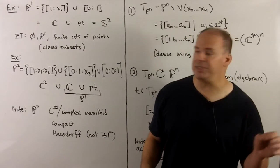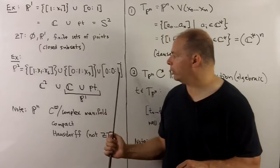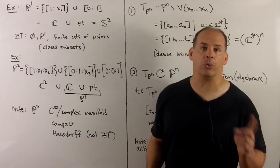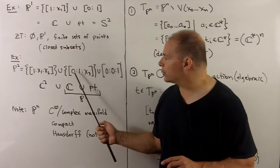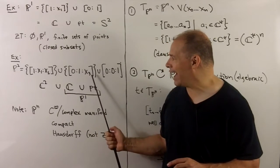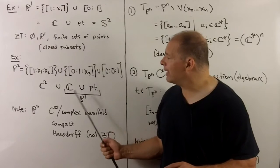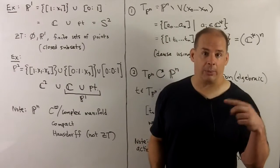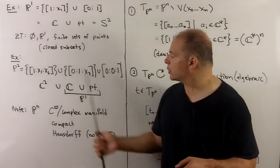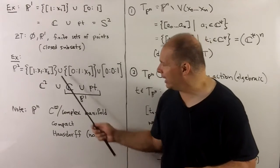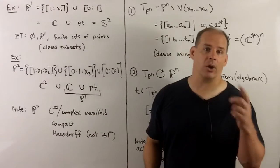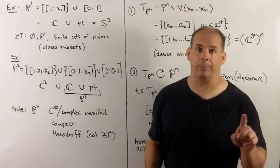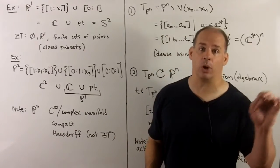Going up a dimension to P^2: if the first two entries are zero, we force a one. If the first entry is zero, we force a one and then we have a free variable. If we force the first entry to be a one, we have free variables in the next two. So we're just taking a P^1 and adding in a C^2 — adding on a two-dimensional complex cell. That's the process in general, going to P^3, P^4, and so on.